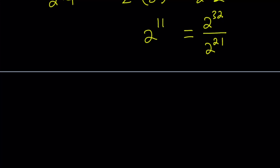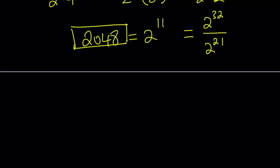What is 2 to the power 11? It is 2 times 2 to the power 10, which is 2 times 1024, and that is equal to 2048. I had made a video a while ago on x to the power x equals 2048 — you can go ahead and check that out here.